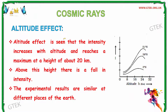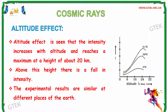Now let us see about the altitude effect. The altitude effect shows that the intensity increases with altitude and reaches a maximum at a height of about 20 km. Above this height there is a fall in intensity. The experimental results are similar at different places on Earth. On the right side you can see the graphical representation of altitude where intensity i is marked on the y-axis and altitude h is marked on the x-axis.